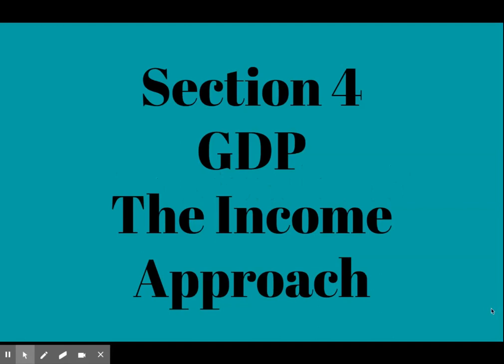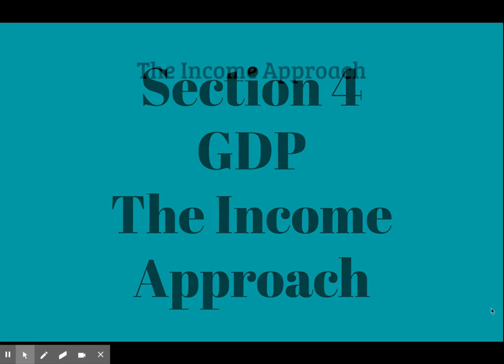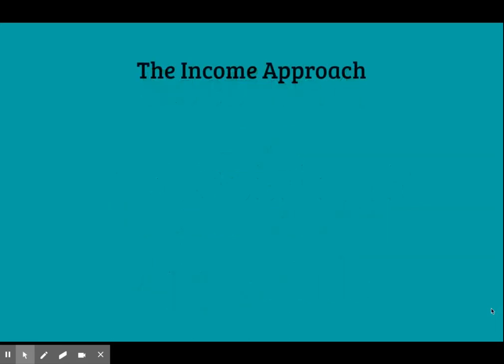Welcome to section 4, the income approach to GDP. The final way to calculate GDP is to add up all the income earned by factors of production in the economy.